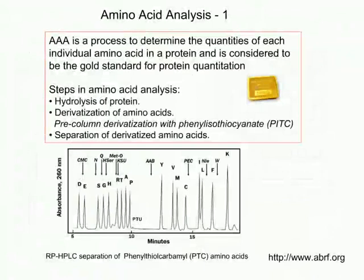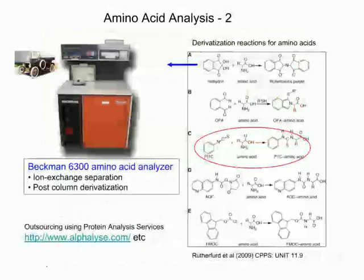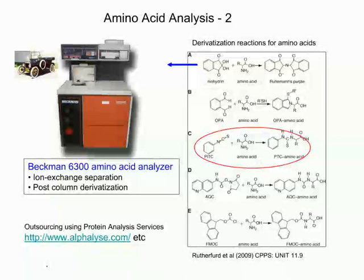Amino acid analysis determines the amount of amino acids in a protein and is considered the gold standard because it is independent of other considerations. Normally we hydrolyze the protein, derivatize the amino acids, and resolve them by pre-column or post-column derivatization with ninhydrin. There is also a classic amino acid analyzer. Most people outsource this analysis. It is a very specialized methodology, but very accurate.